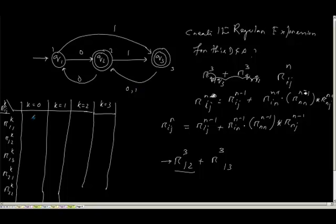So R11k for k is equal to 0, what it will be? Tell me. It will be epsilon. What will be R12k for k is equal to 0? From state q1 to q2, I move and generate this string 0.